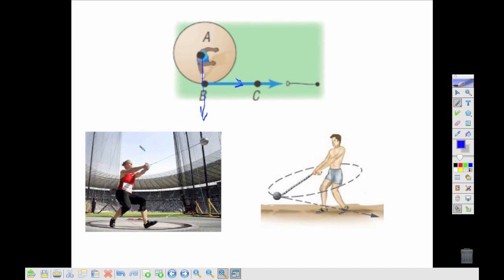So in an event like the hammer toss, if this athlete wants to throw this hammer out in this direction, she needs to let go of that when she's actually facing over in this direction because the object will continue along the tangent line.